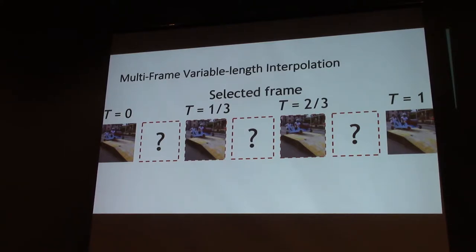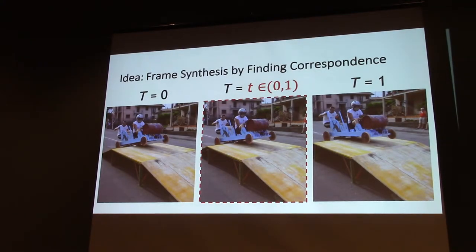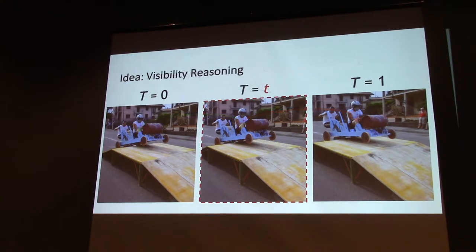Let me dive into the details and show you how Super Slow Mo works. This is our basic idea. We have two input images at time 0 and time 1, and we'd like to synthesize an intermediate frame at time t. For each pixel at time t, if we could find its correspondence in input images, we can directly borrow the corresponding pixel values and fuse them. Sometimes we also have to deal with occlusion or visibility reasoning, because not all pixels at intermediate time t can find correspondence in input images because of occlusion.